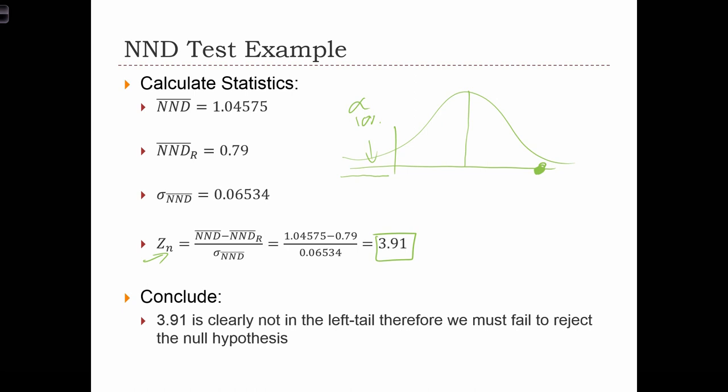So we reject, we can't reject the null hypothesis. So in this case, we don't have evidence that the NND is not random.